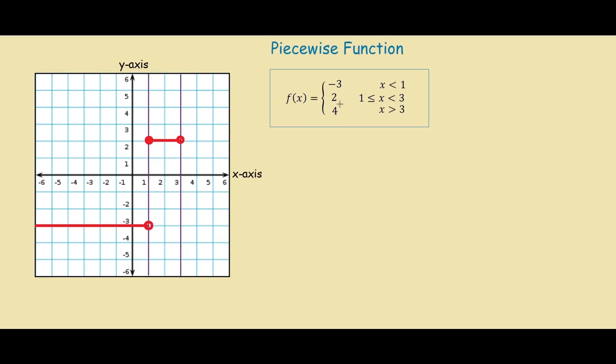Lastly, we have the function y equals 4. And if we look at the restraint, there's no equal sign. It's only a greater than. So we leave it as an open circle.